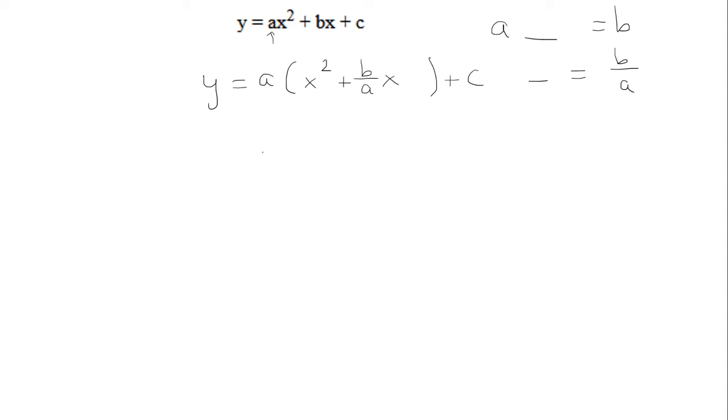At this step, we're going to add another term. So the key here is to take the middle term, so take this b over a, divide it by 2, and square it. So b over a divided by 2 is b over 2a. Now squaring it will be b squared over 4a squared.